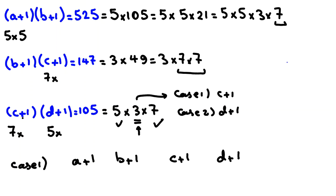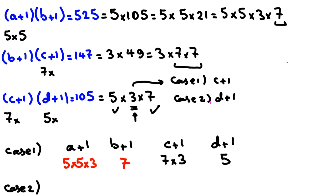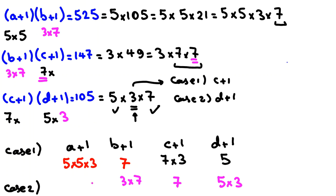In Case 1, C plus 1 = 7 times 3 = 21, so D plus 1 = 5, meaning D = 4. Since C plus 1 = 21, B plus 1 = 7, so B = 6. Then A plus 1 = 5 times 5 times 3 = 75, so A = 74. In Case 2, the factor of 3 goes to D plus 1, so D plus 1 = 5 times 3 = 15, meaning D = 14. C plus 1 = 7 only, so C = 6. Then B plus 1 = 3 times 7 = 21, so B = 20. And A plus 1 = 5 times 5 = 25, so A = 24.